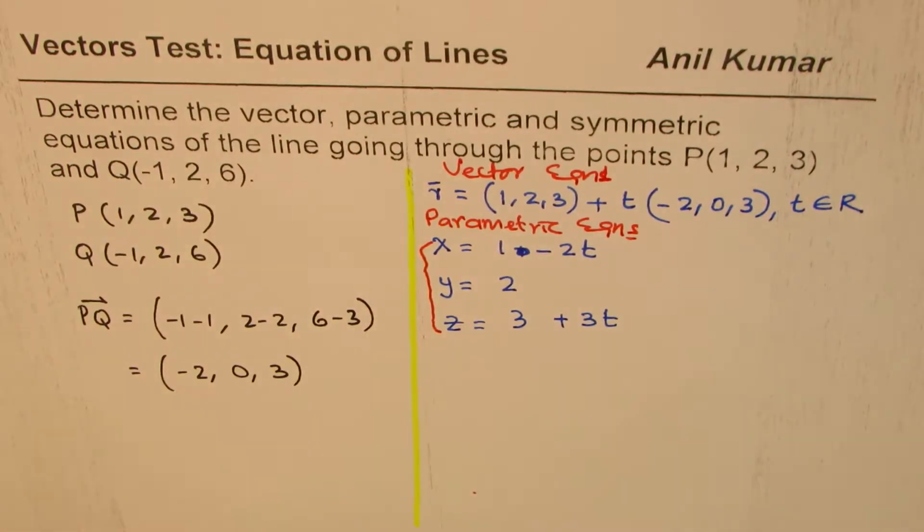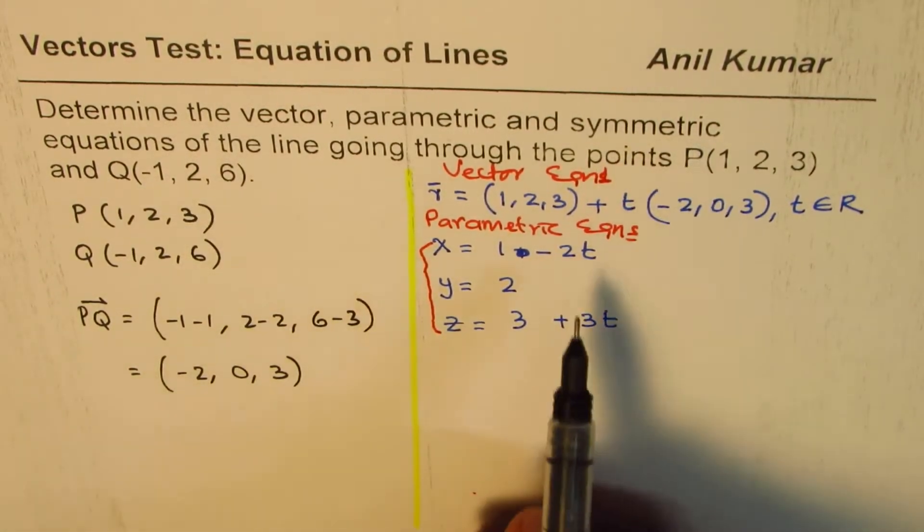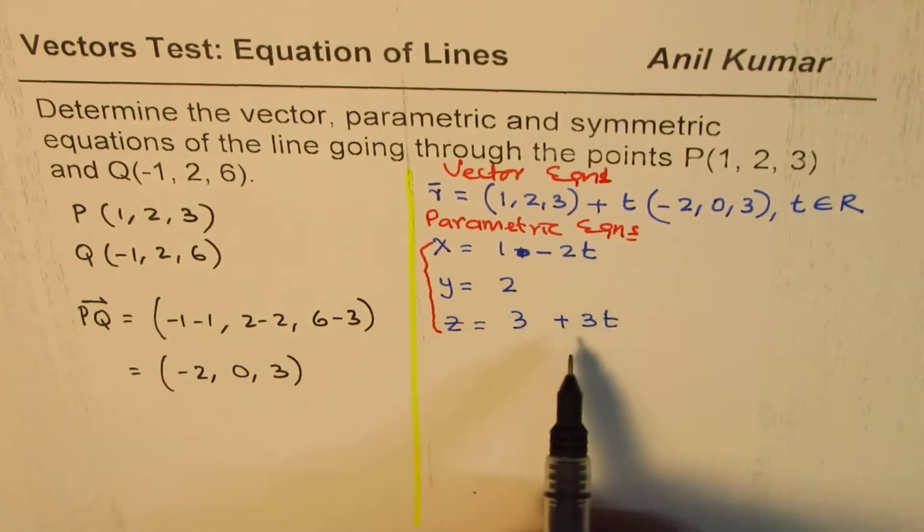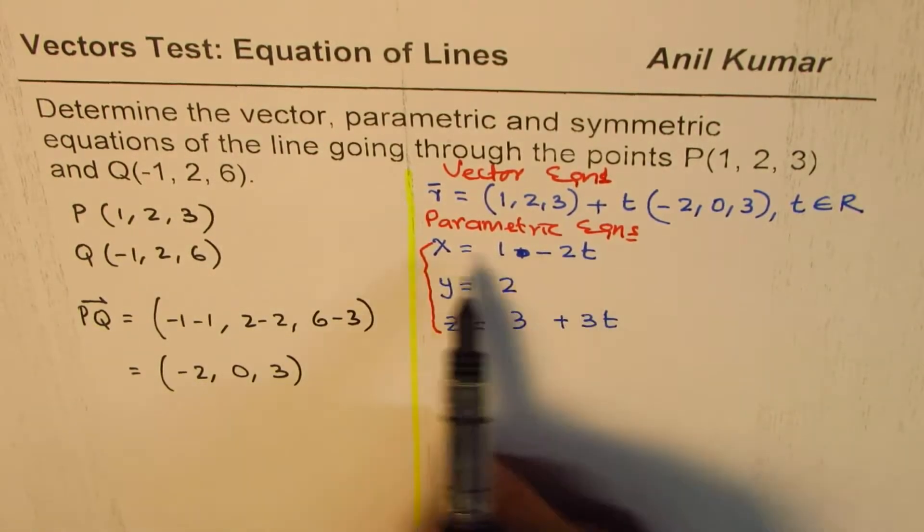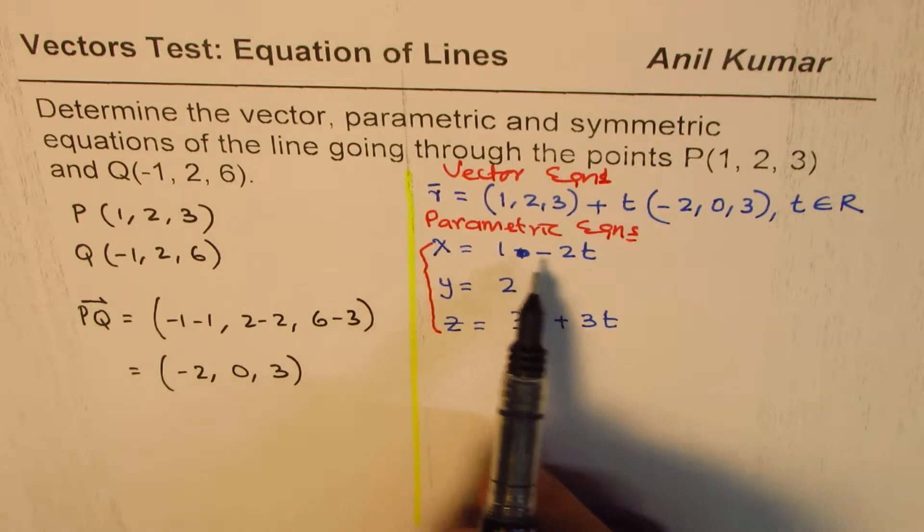Now, we need to write the symmetric equation. How do we get that? To find the symmetric equation, we just need to isolate t and equate it.